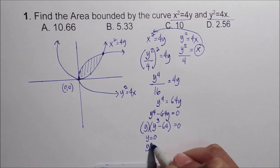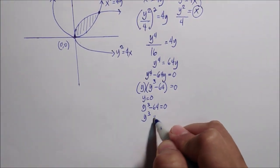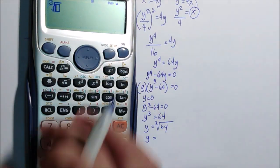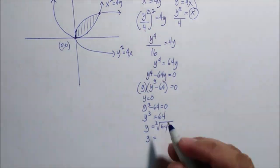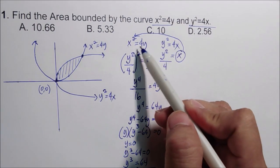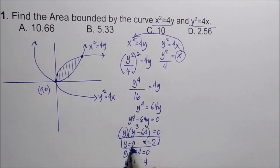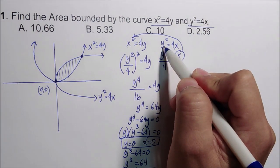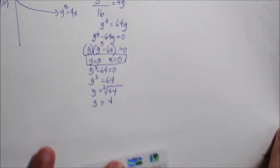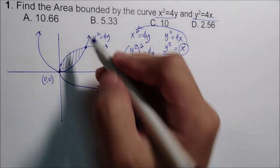So y equals 0, and y cubed equals 64, giving y equals the cube root of 64 equals 4. If y is 0, then x is 0 — so one intersection point is (0, 0). If y is 4, substituting into x squared equals 4y gives x squared equals 16, so x equals 4. The second intersection point is (4, 4).